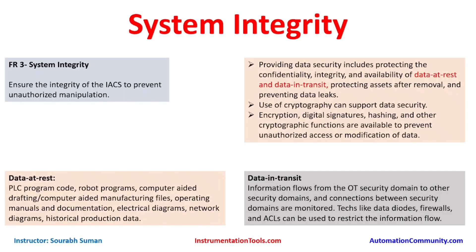This chapter is about system integrity, the third foundational requirement. It states to ensure the integrity of the IACS — Instrumentation and Automation Control System — to prevent unauthorized manipulation. We will talk about how to ensure the integrity of our IACS environment, which includes protecting the confidentiality, integrity, and availability of data.